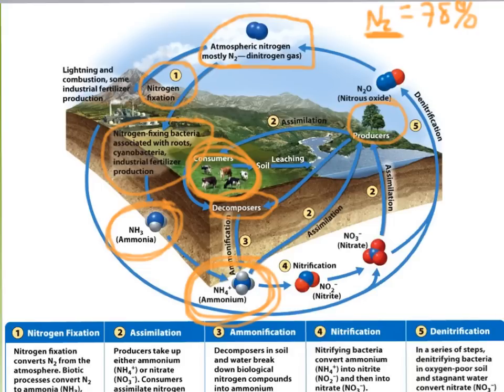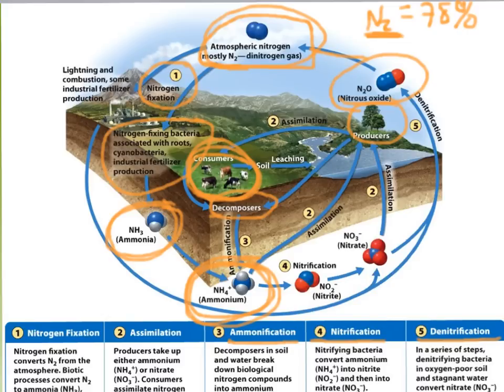That process is called ammonification. We also have another process — step four — nitrification, where bacteria in the ground take the ammonium and convert it into nitrite and also nitrate. These are negative ions, and this is an intermediate step leading to the final step, denitrification, in which bacteria in deep and stagnant water and soils with little oxygen convert nitrite and nitrate to nitrous oxide, and then ultimately back to atmospheric nitrogen. That completes the cycle.